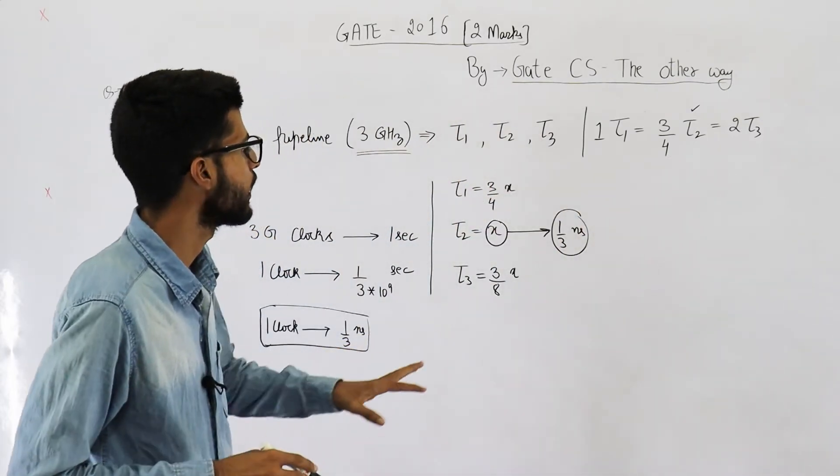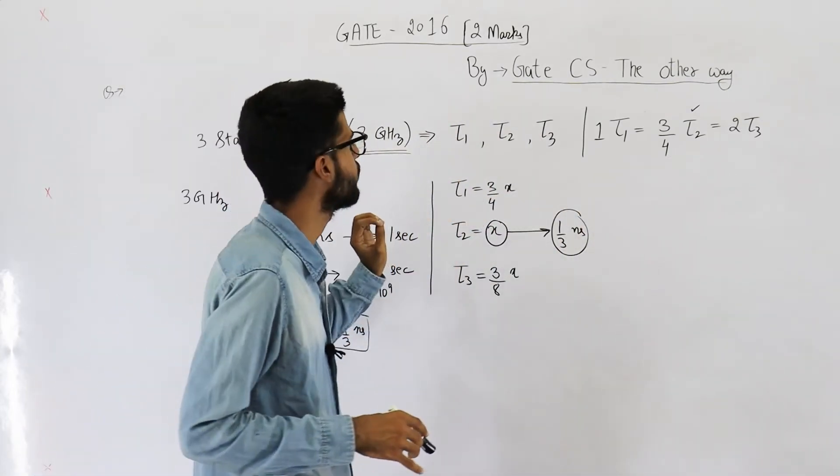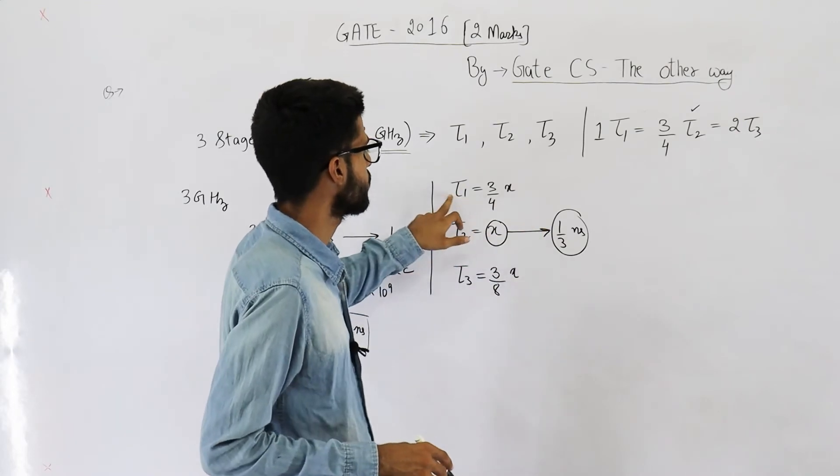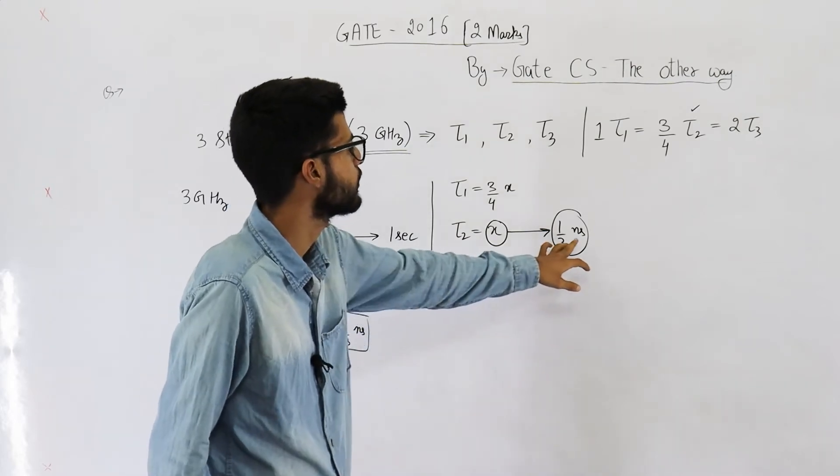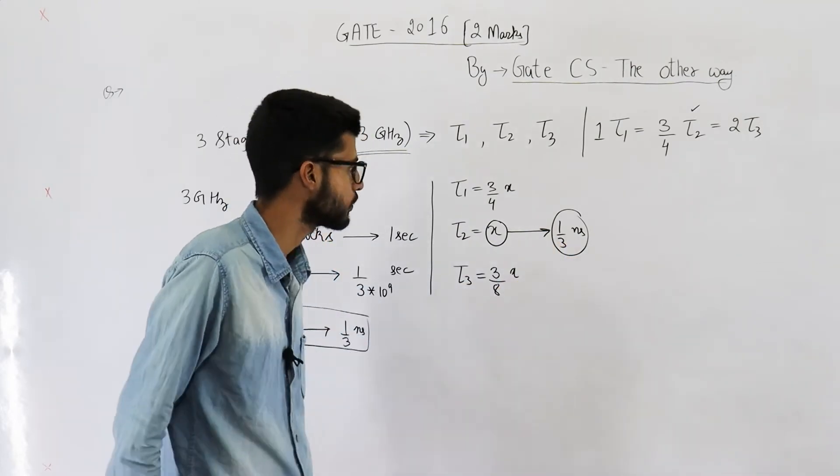From here, you will get to know the stage delay of every stage. So, tau1 is equal to 3 by 4 into 1 by 3, that is 1 by 4. Similarly, substitute x here also to get tau3.